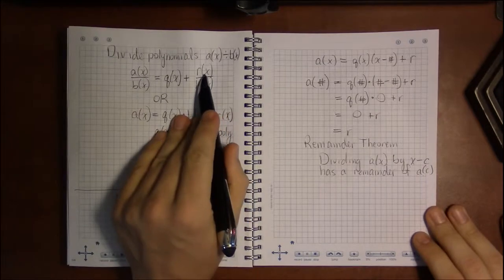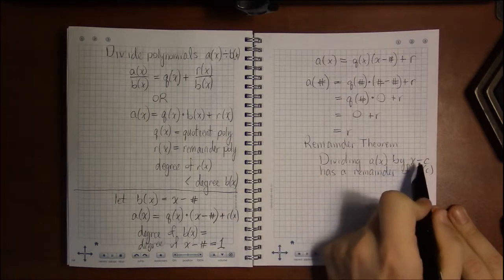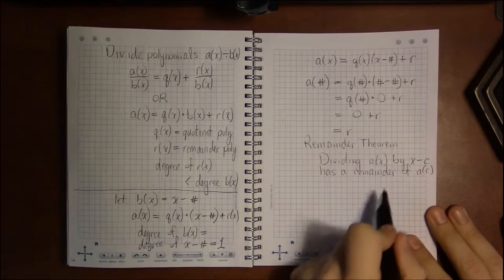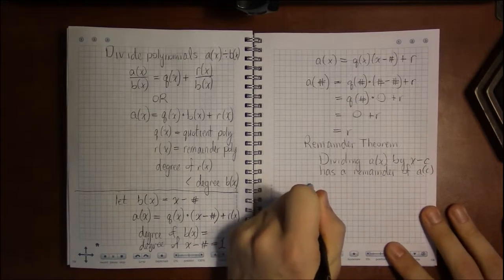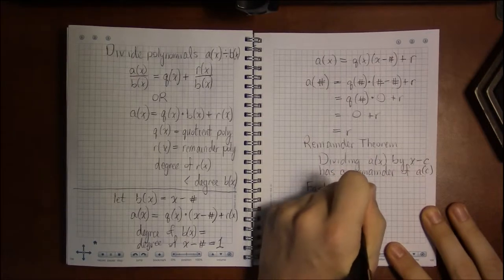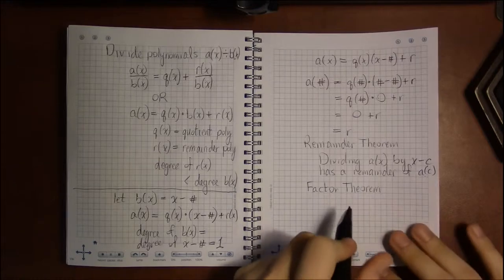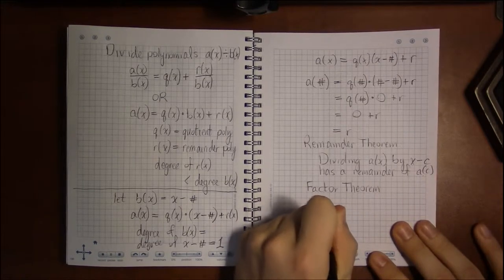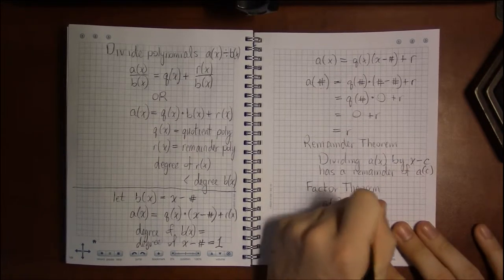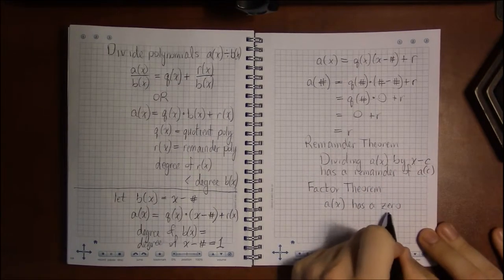Well, we can say the same thing here, that if our remainder is zero, then what we divided by was a factor of the polynomial that was our numerator. And this is called the factor theorem, that a polynomial, any polynomial A of X, has a zero or an X intercept or a root—all those mean the same thing—has a zero at X equals C if and only if